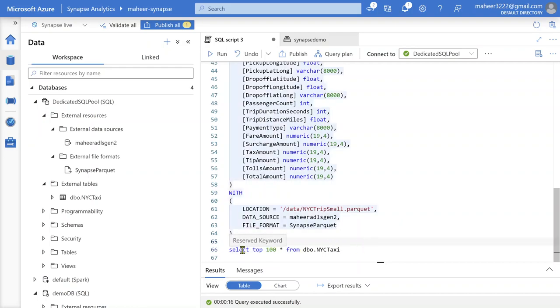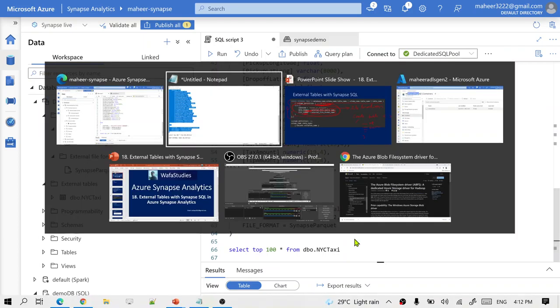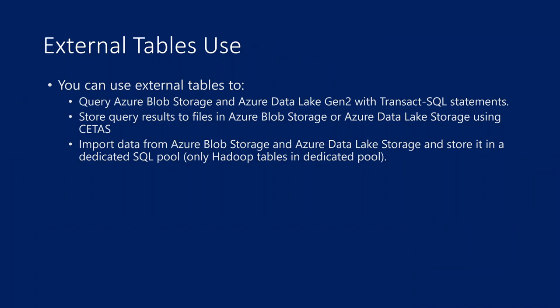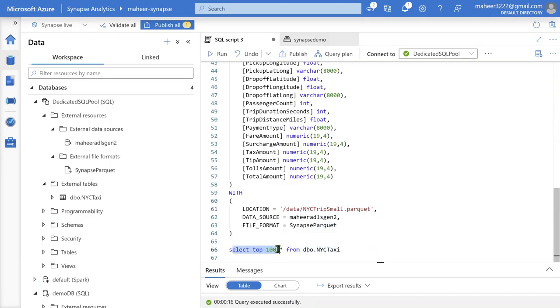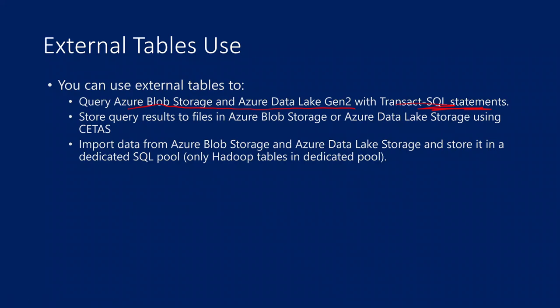So let's go back to our presentation and understand the uses of external tables. There are a couple of uses. First — and by now you can sense this — you can query your data which is available inside your blob storages or ADLS Gen2 using T-SQL syntax. That is what we did: we simply used a select T-SQL syntax to query the data in Data Lake Storage Gen2 indirectly. You can also store results to files in your blob storages or ADLS storages using CETS.